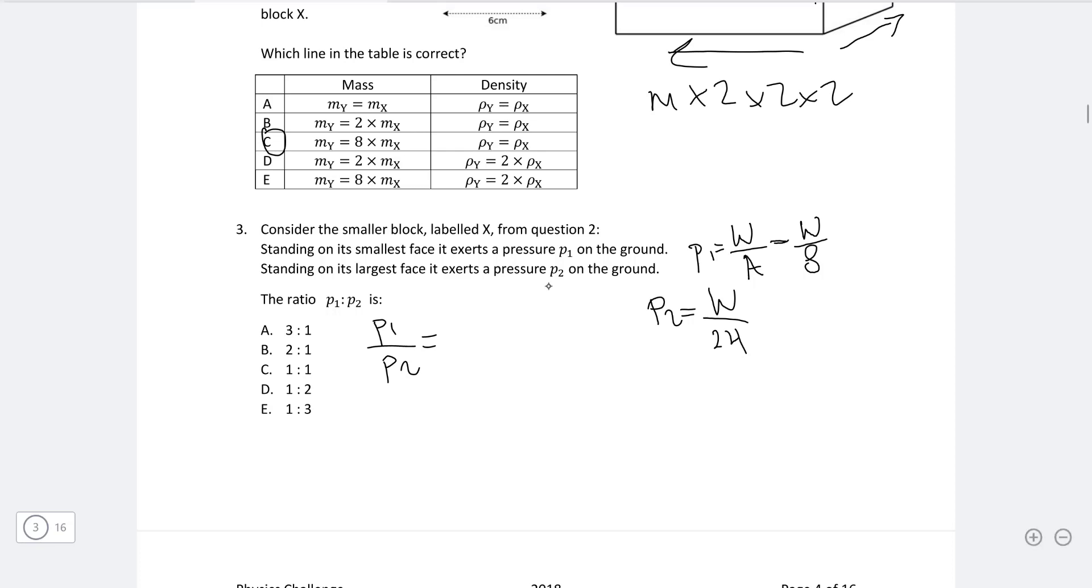So the ratio P1 to P2, this is just a division sign because the ratio sign actually just means a division sign. So P1 divided by P2 will be equal to W over eight, and dividing by P2, dividing by a fraction is the same as multiplying by the inverse, which is going to be 24 divided by W. And the Ws are going to be cancelled. And what we're going to be left with is 24 over eight, which is three. Therefore, the correct answer is A, three to one.